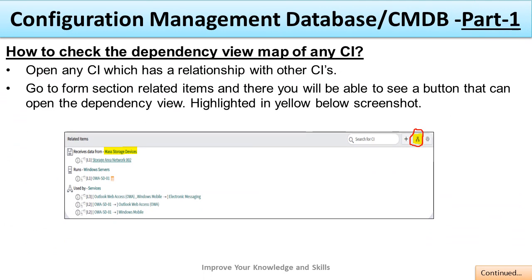How to check the Dependency View Map of any CI: Open a CI that has a relationship with other CIs and go to the form section under Related Items. There you will be able to see a button that opens the Dependency View. This button shows the relationship, and you can see all the related items linked to each other.